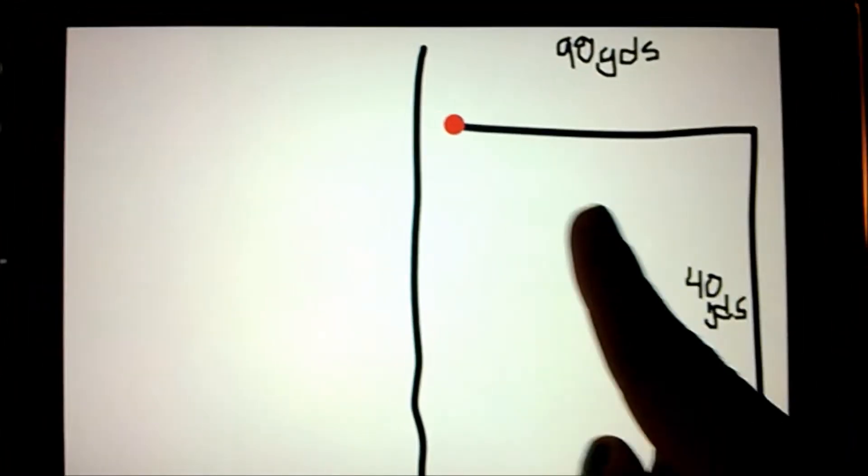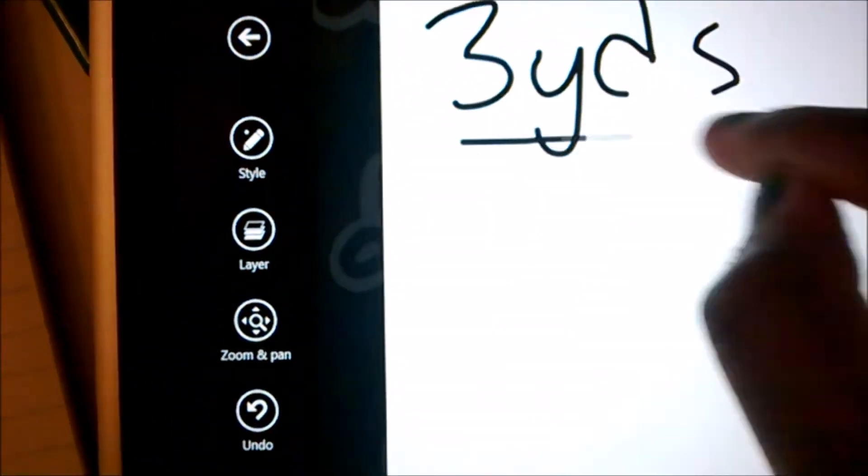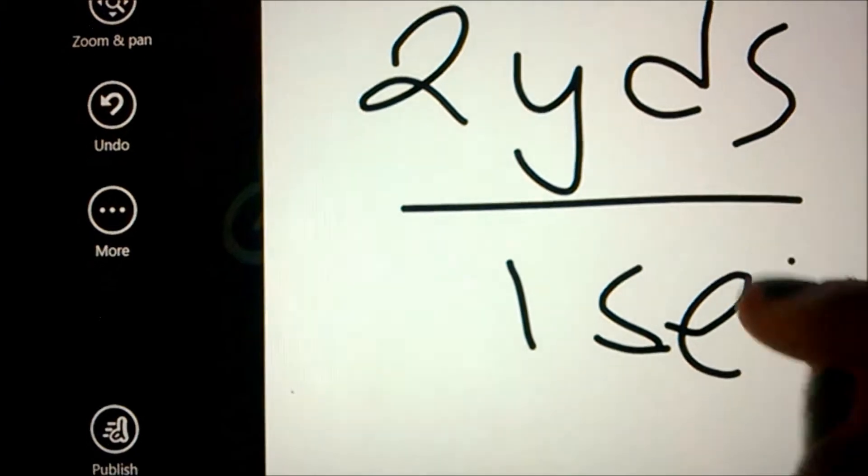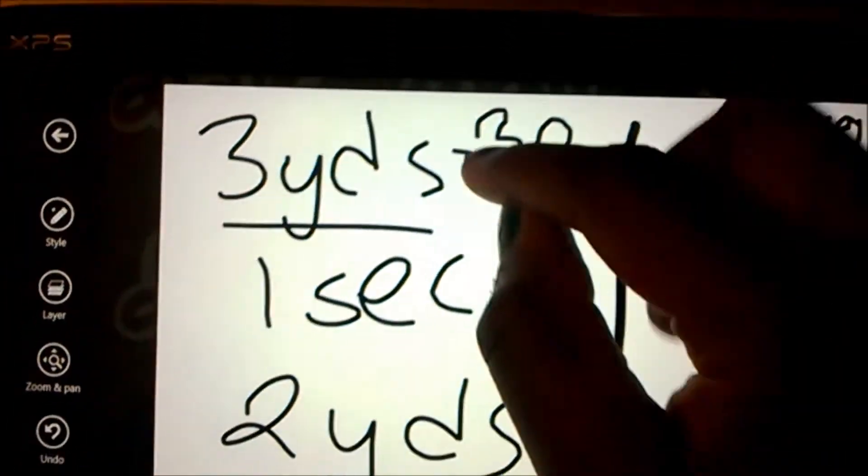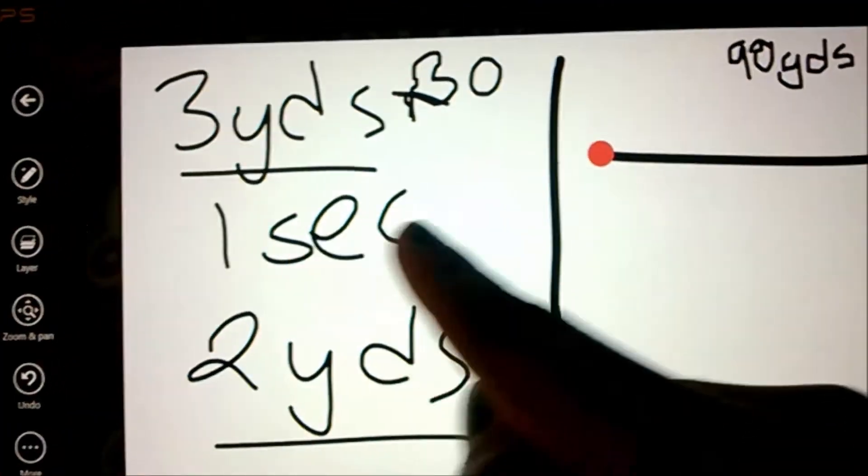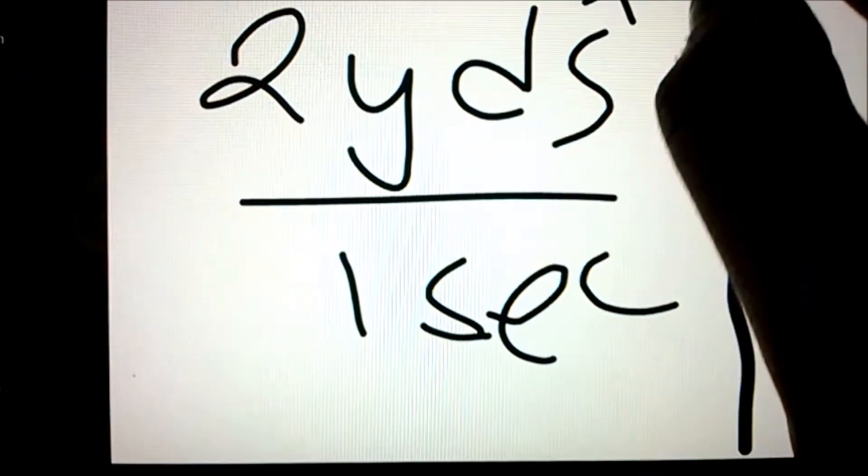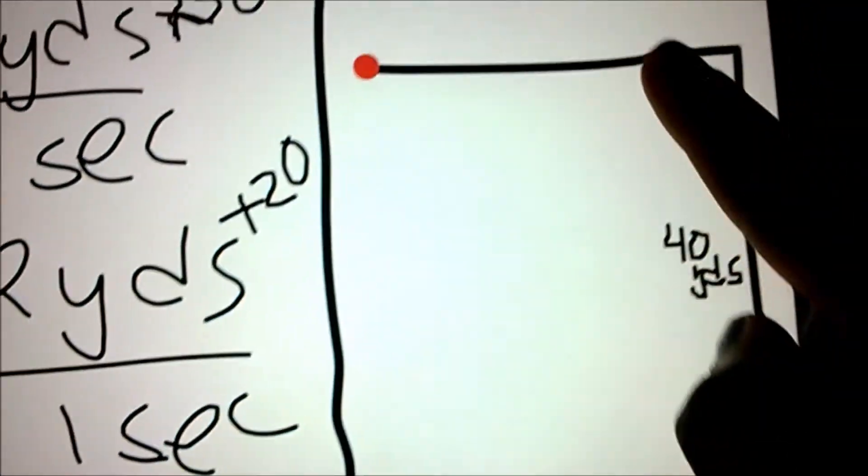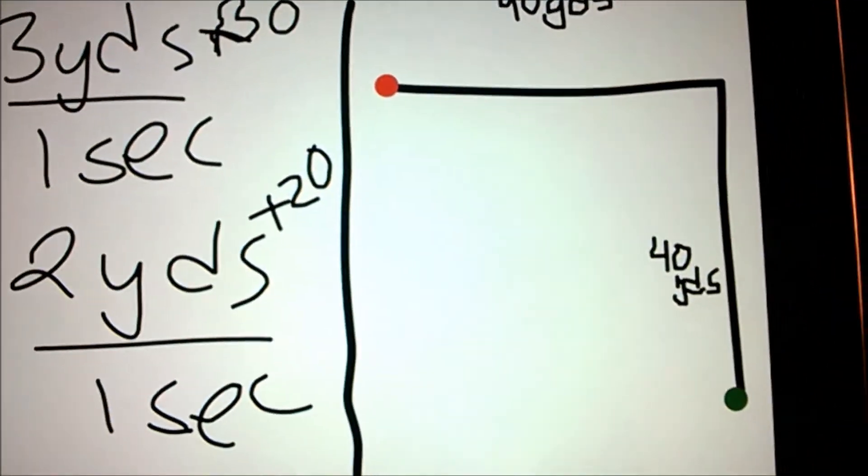The next way she could do it is to run 90 yards here and then swim the rest of the 40 yards. On this sheet, it says that Blossom's running speed is 3 yards per second. Then it says that her swimming speed is 2 yards per second. So we need to multiply 3 by 30 to get to 90. Then 1 second by 30 to get to 30 seconds for here. Then we multiply 2 by 20 to get to 40 yards. And then we multiply 20 by 1 second to get to 20 seconds for here. So she runs 30 seconds here and then swims 20 seconds here. If we put that together, we get 50 seconds.